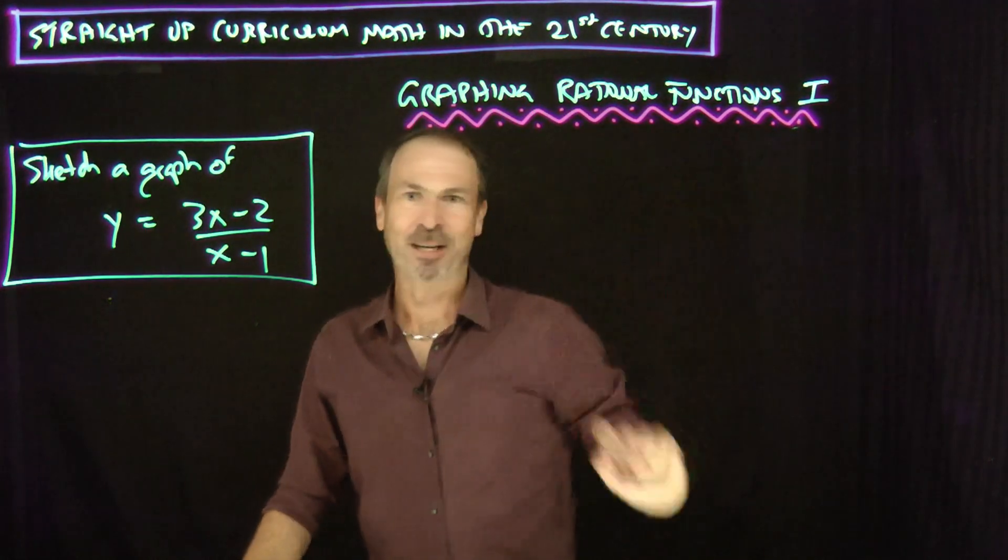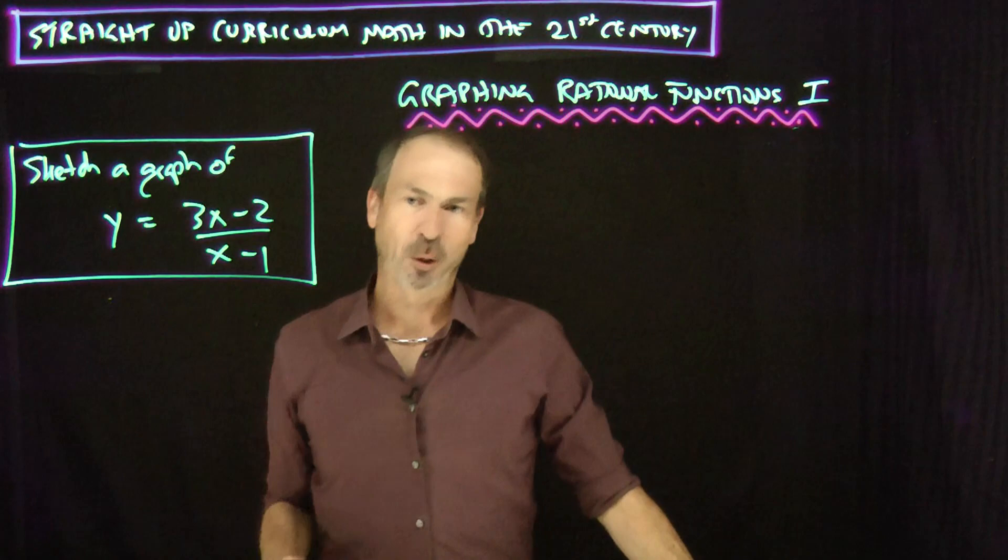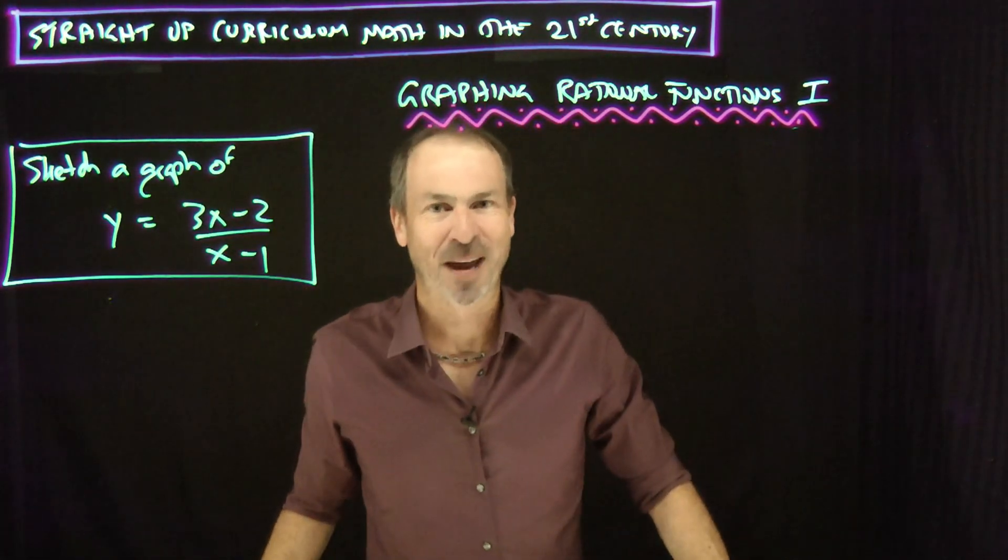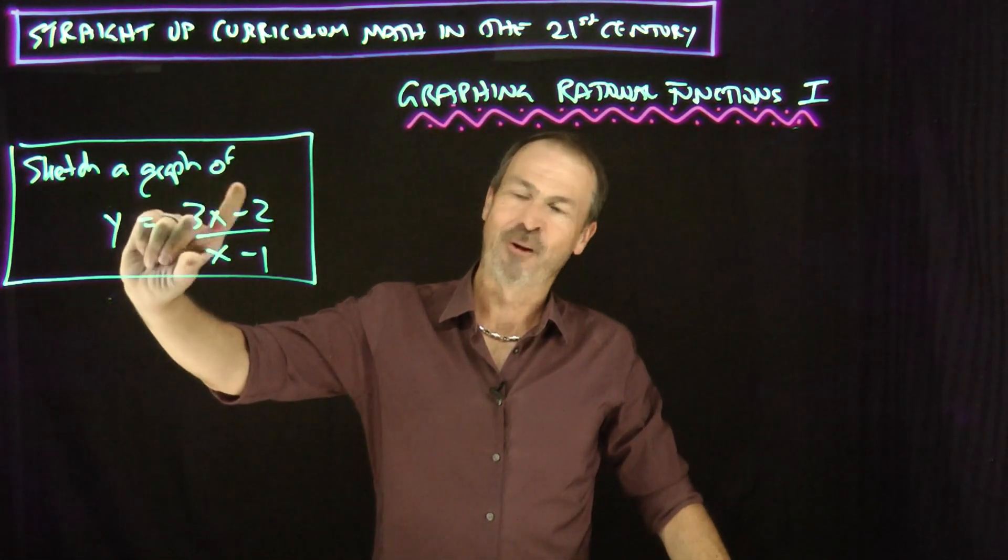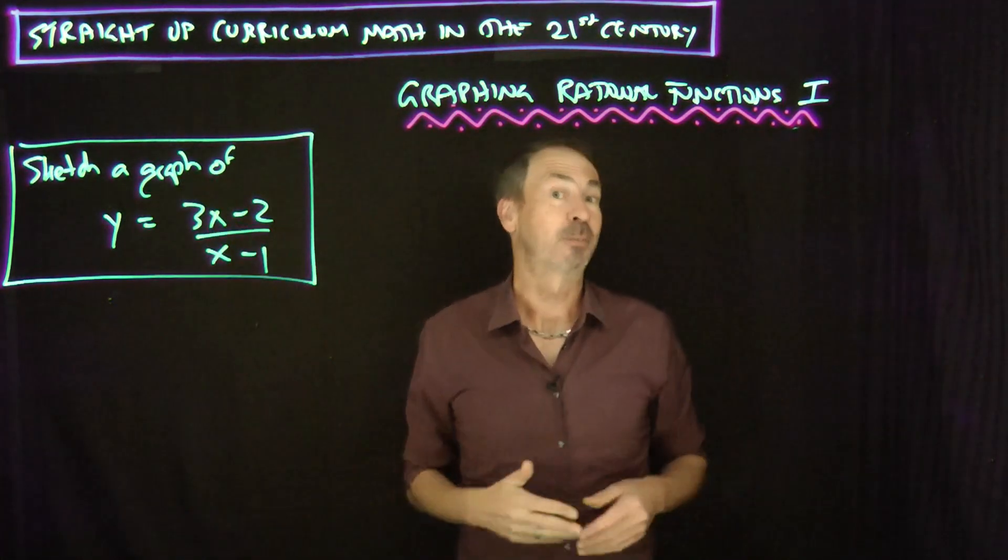I'm going to do a couple of examples and I'll do the first one today. Namely it's going to be this one. Please sketch a graph of this rational equation, y equals 3x minus 2 over x minus 1. So this looks like a fraction, like a rational number here, except I've got polynomials for the numerator and denominator, a rational expression. Alright, great.